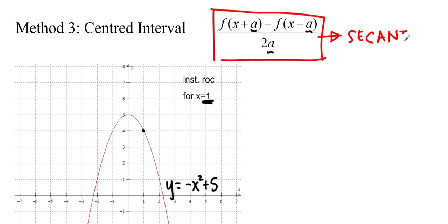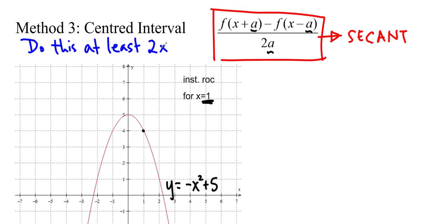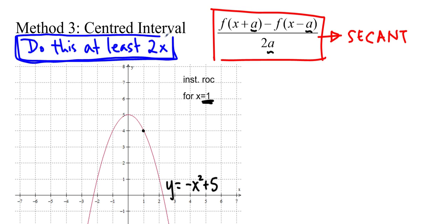You can't just do this method one time — you actually have to do it at least two times. I know it's not the tangent, it's not the actual instantaneous rate of change, but we're going to try to approximate the tangent, since we don't have a really good accurate way of doing that yet. So we're going to do this at least two times.